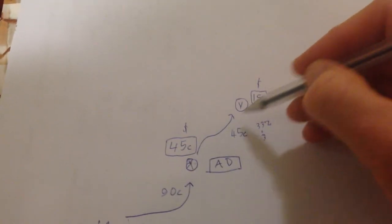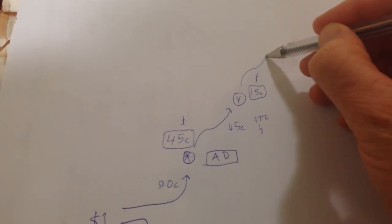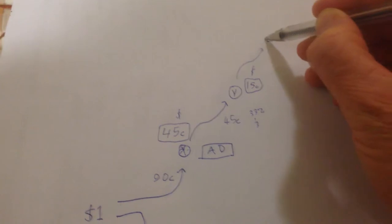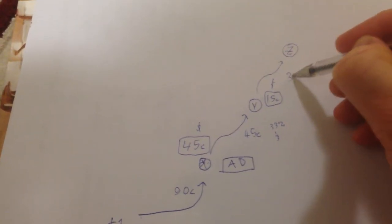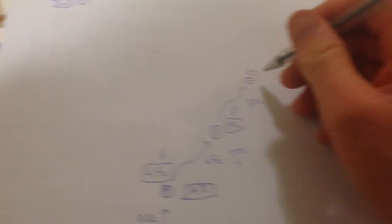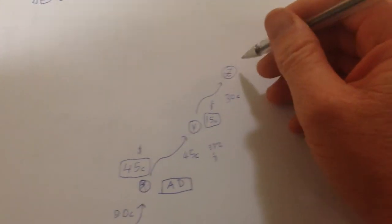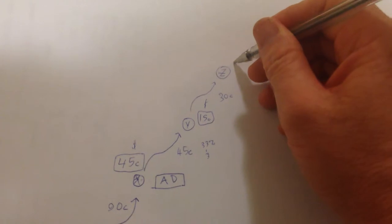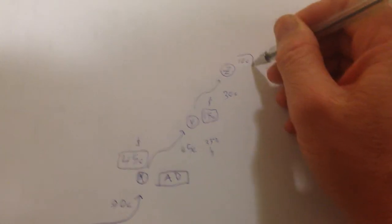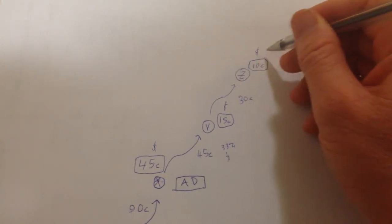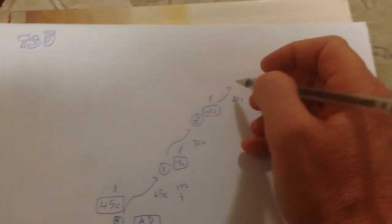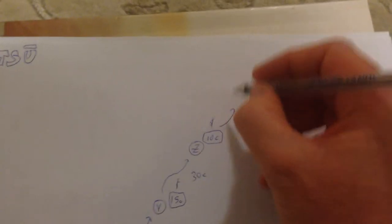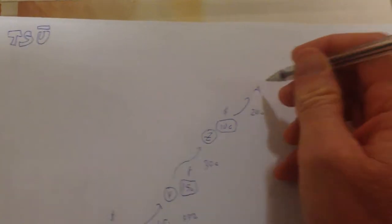What that means is there's $0.30 left over which is going to get passed up to person Z, who invited person Y. So $0.30 is being passed up now. Person Z is going to get 33% of $0.30 which means person Z is going to get $0.10 which leaves over $0.20 which is going to get passed up to person A, who invited person Z.